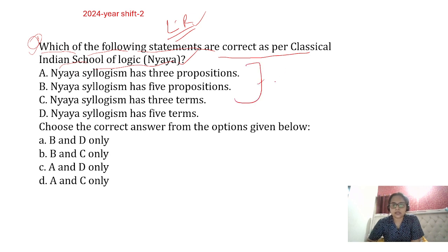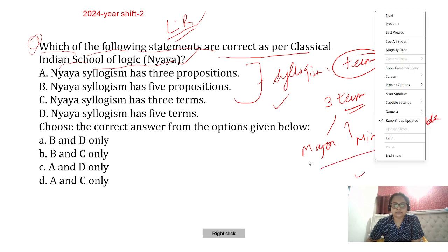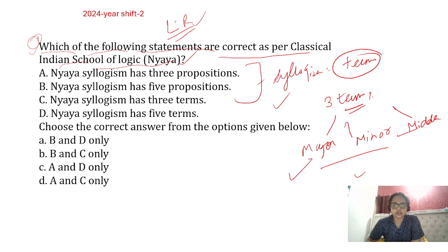If I talk about syllogism, then you need to know how many terms there are. In syllogism, there are three terms. Which terms are these? Major terms, minor terms, and middle terms. So according to these terms, the terms are three. What is the answer here? The C option is absolutely right. Terms are three.